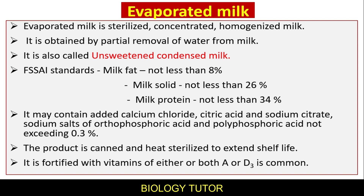FSSAI standards for evaporated milk: milk fat not less than 8%, milk solids not less than 26%, and milk protein not less than 34%. It may contain added calcium chloride, citric acid, sodium citrate, and sodium salts of orthophosphoric acid and polyphosphoric acid not exceeding 0.3%. The product is canned and heat sterilized to extend shelf life, and fortified with vitamins A and/or D3.